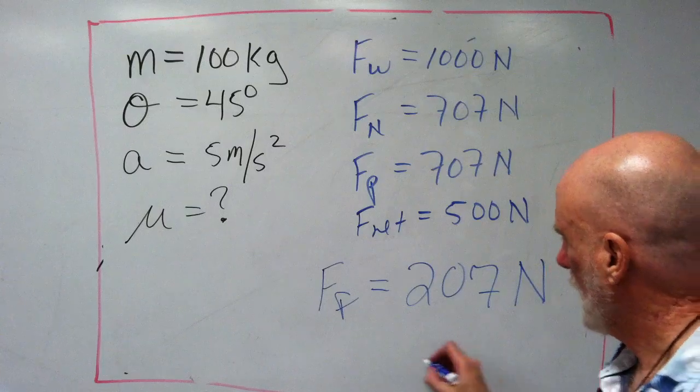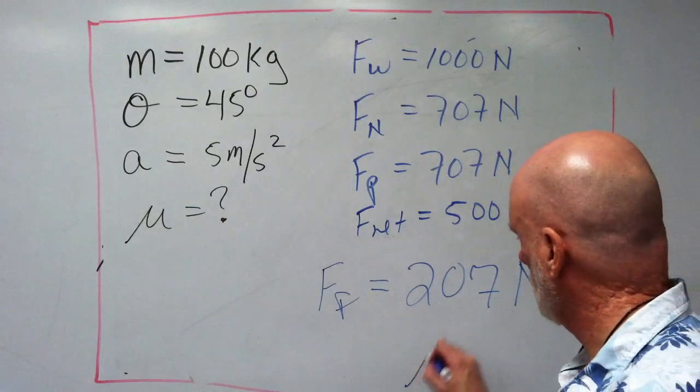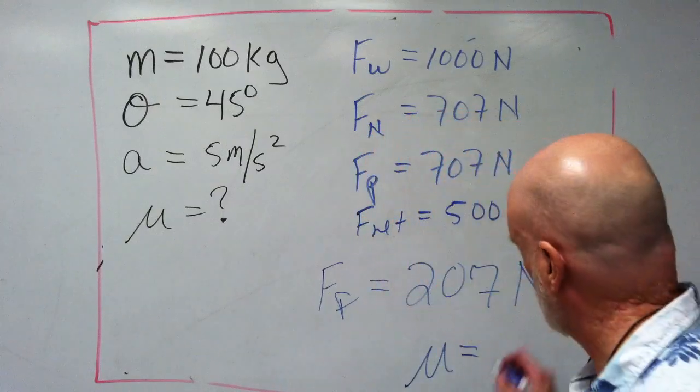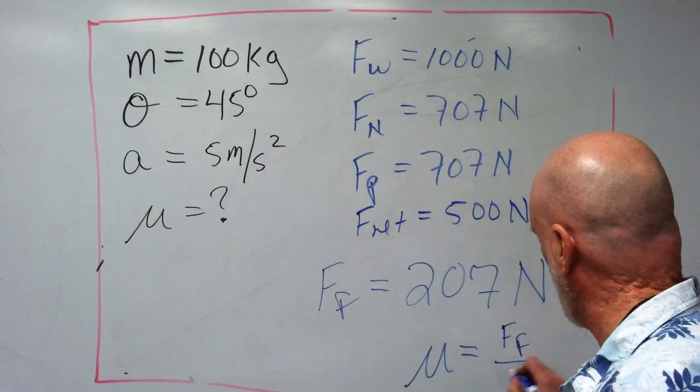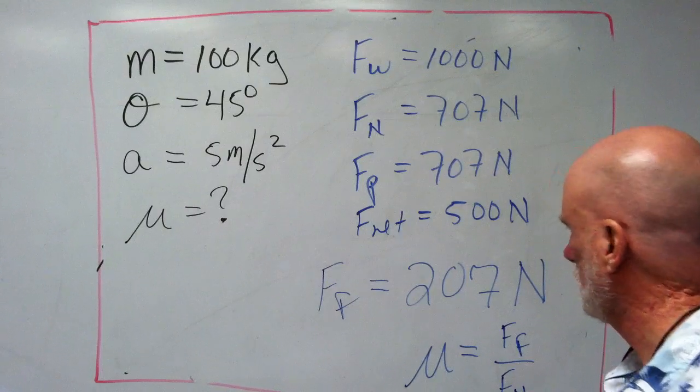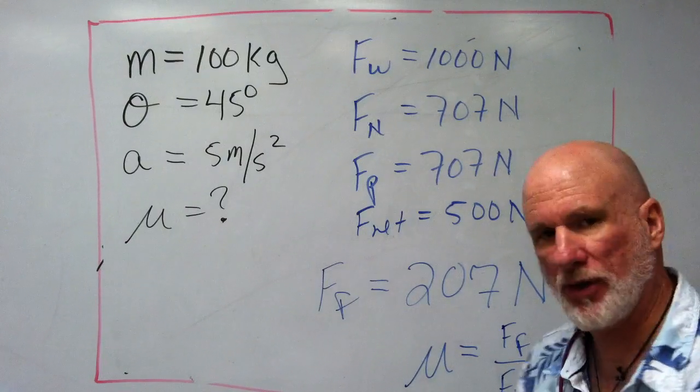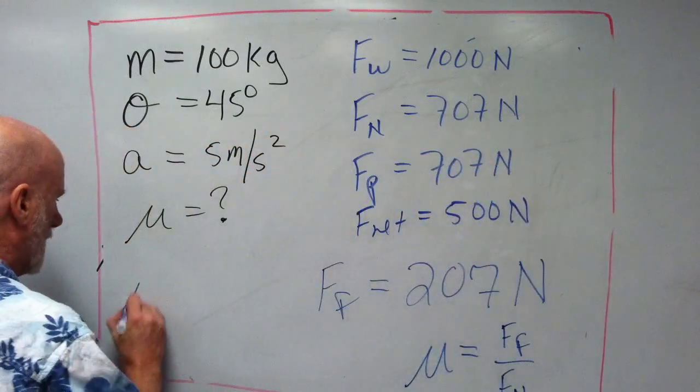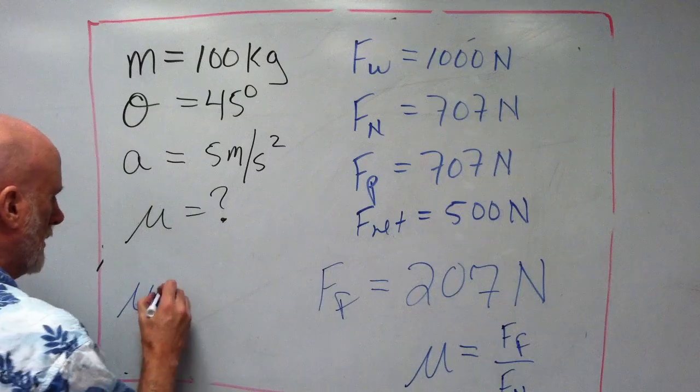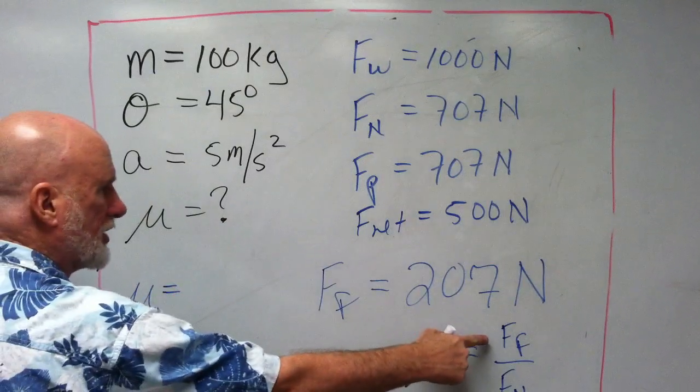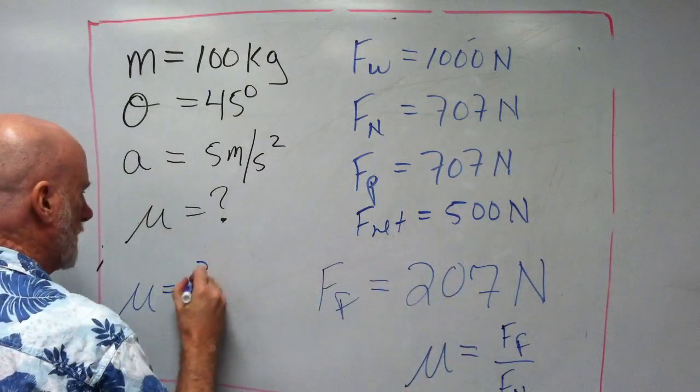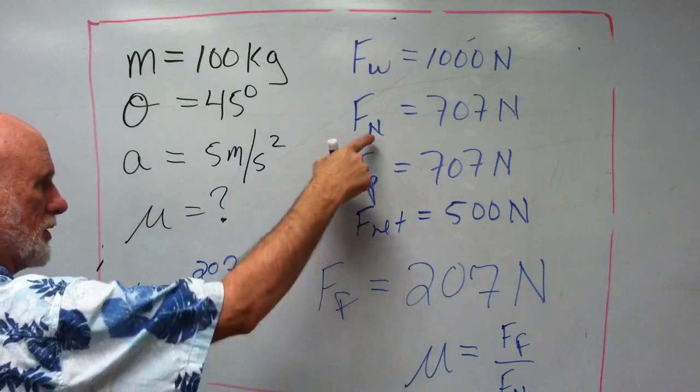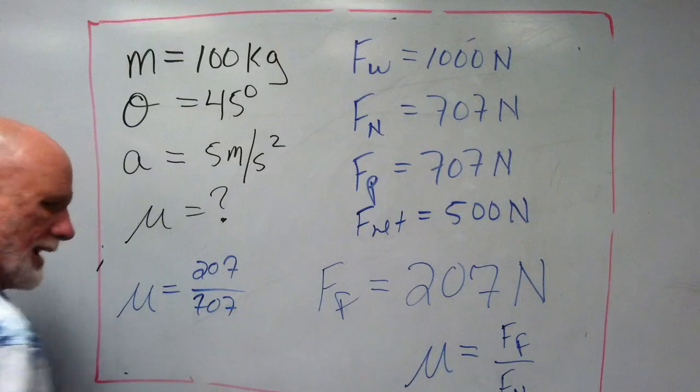Now, I know that mu equals friction over normal. Friction over, right? So it's going to be mu equals the friction 207 over the normal 707.